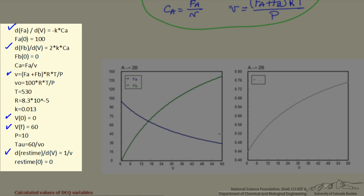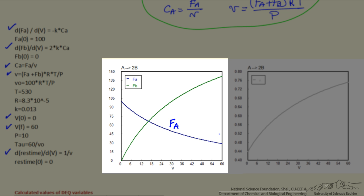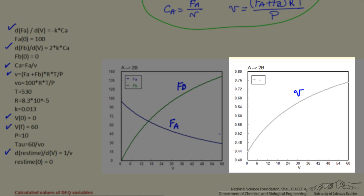We calculate the volumetric flow rate and the concentration in the reactor. The molar flow rate of A decreases, the molar flow rate of B increases more than the decrease in the molar flow rate of A, and this is the volumetric flow rate, so you can see it increases significantly.